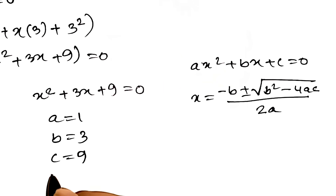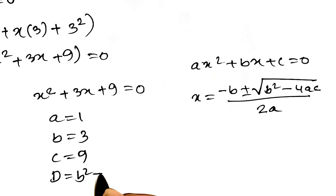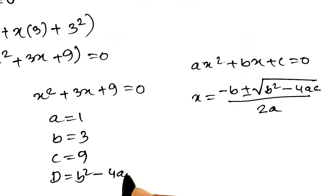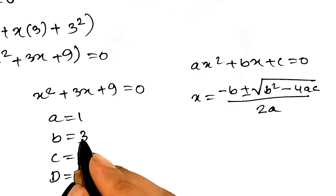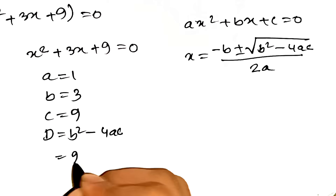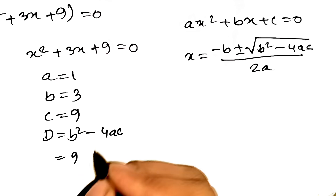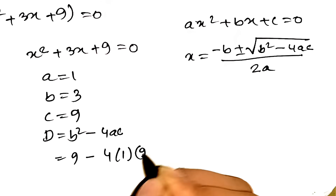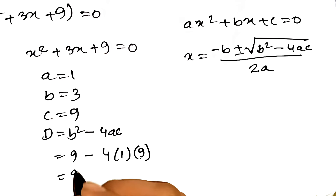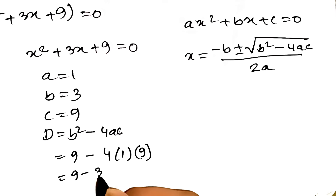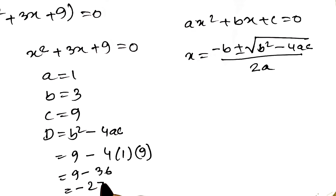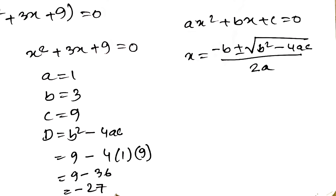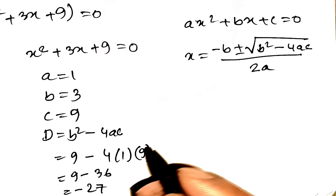First, we need the discriminant — that's b squared minus 4ac. b squared is 3 squared, which is 9. Then 4 times a times c is 4 times 1 times 9, which is 36. So 9 minus 36 equals negative 27. A negative discriminant means our roots are going to be complex, not real.